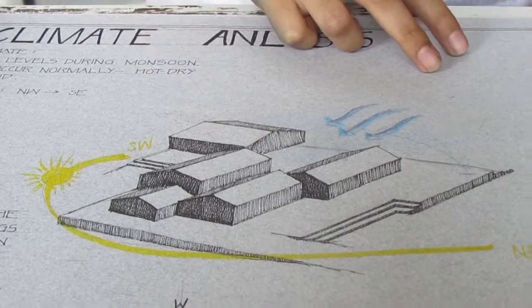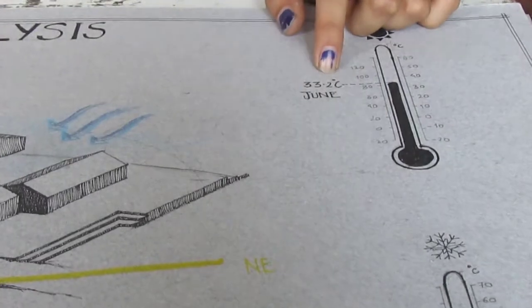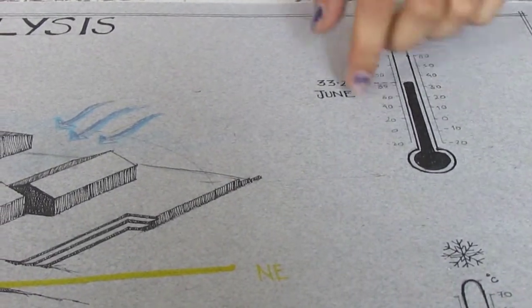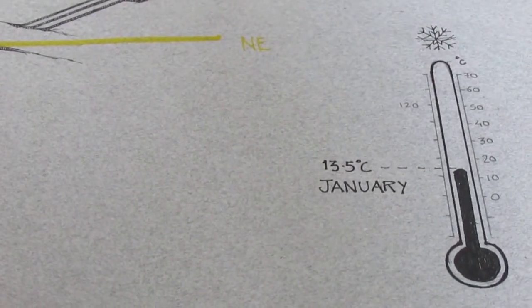Also I have calculated the temperatures. It was highest in June at 33.2 degrees Celsius and in winters it is 13.5 degrees Celsius in January.